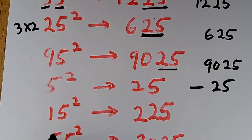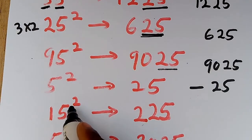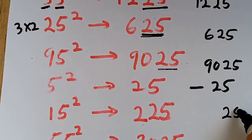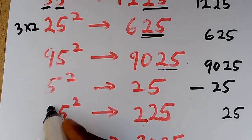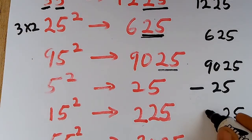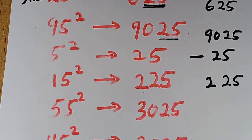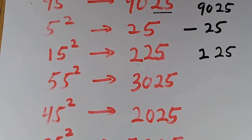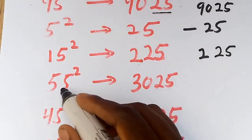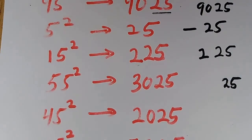For 15 squared, the last number is five so the last result is 25 — write it there. Multiply the first digit 1 by the next number, which is 2. Two times one gives us 2, so write it in front: 225. For 55 squared, the last result is 25.